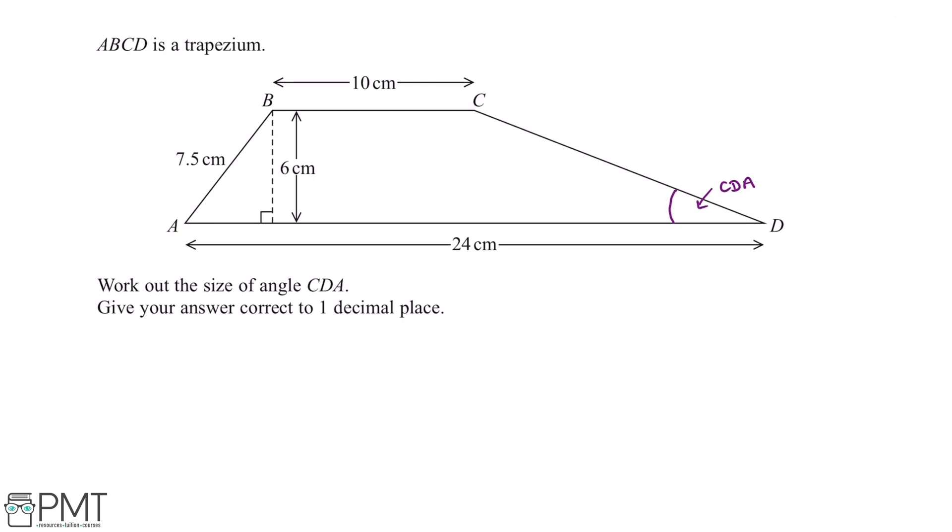So the first thing we can do to make this question easier to solve is by adding a line here, and this gives us a triangle on the right hand side of this trapezium, making this angle a right angle.